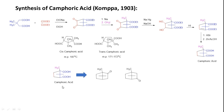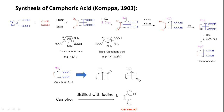Now we must convert camphoric acid to camphor. Since camphoric acid has the same carbon number as camphor, we need to join two carbons to form a bicyclic compound and add the carbonyl carbon. When camphor was distilled with iodine, carvacrol — a known compound — was obtained. Since oxygen is present, this determined the position of the carbonyl group, giving the confirmed structure of camphor.